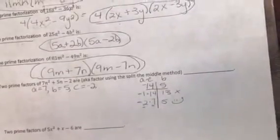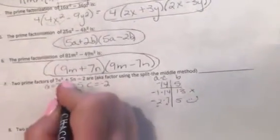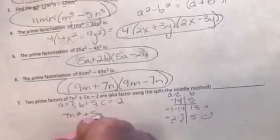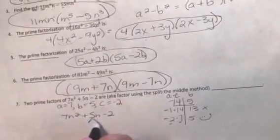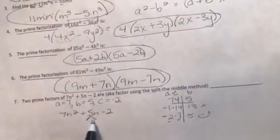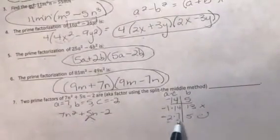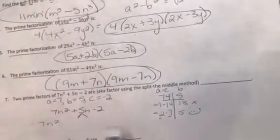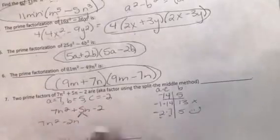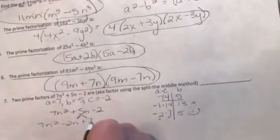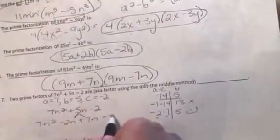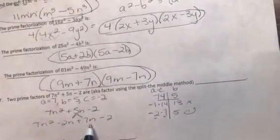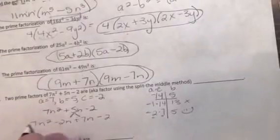Now these two become the middle terms. I'm going to rewrite the 7n squared plus 5n minus 2. So now we're going to replace the 5n. We're splitting the 5n into the minus 2n and plus 7n. So we first rewrite the 7n squared, subtract 2n, add 7n, and the minus 2 comes down. Now we could have written these in either order, and it will all work out the same.